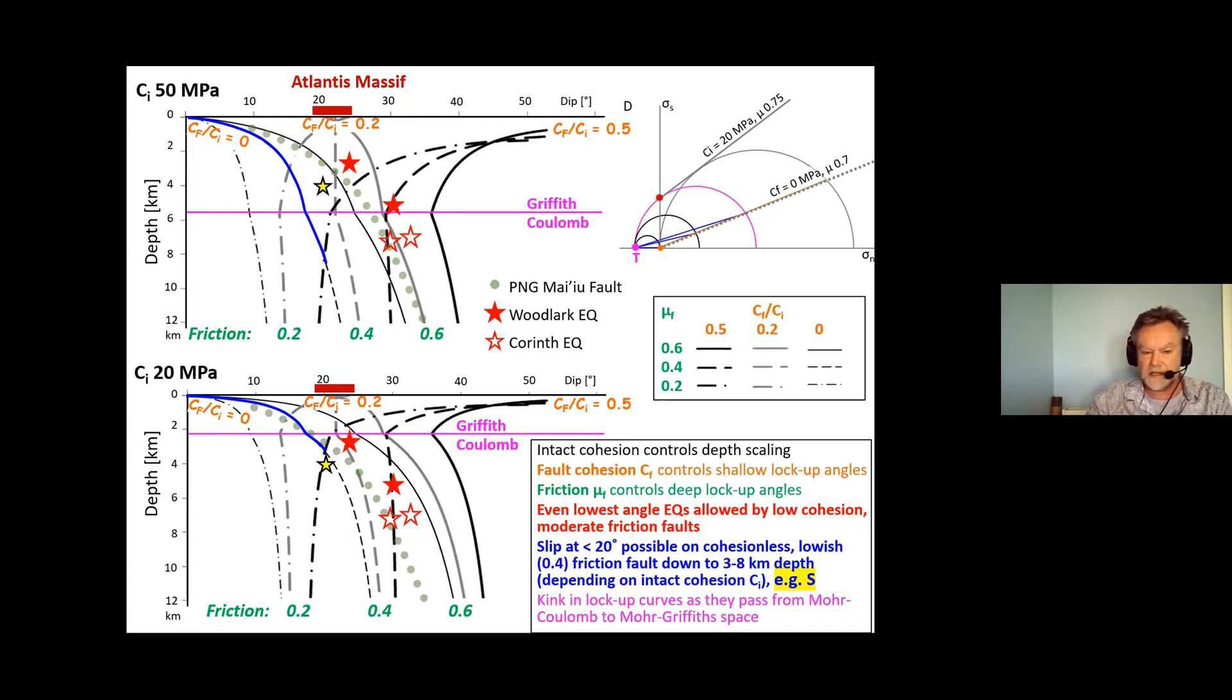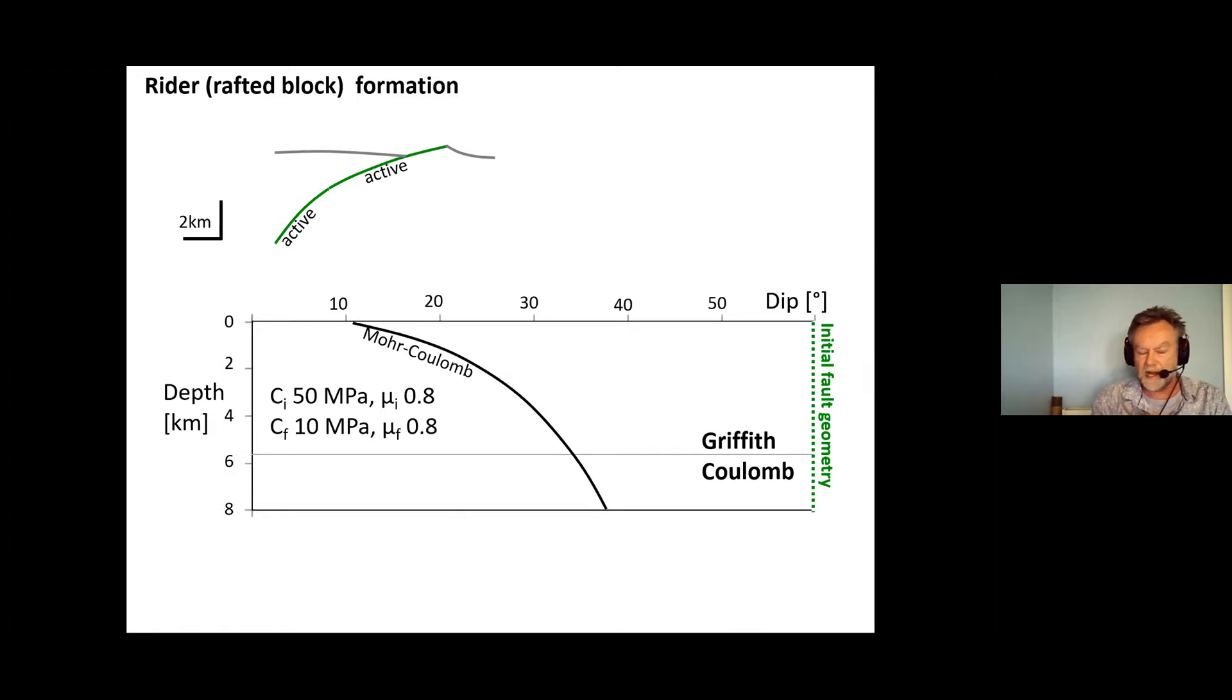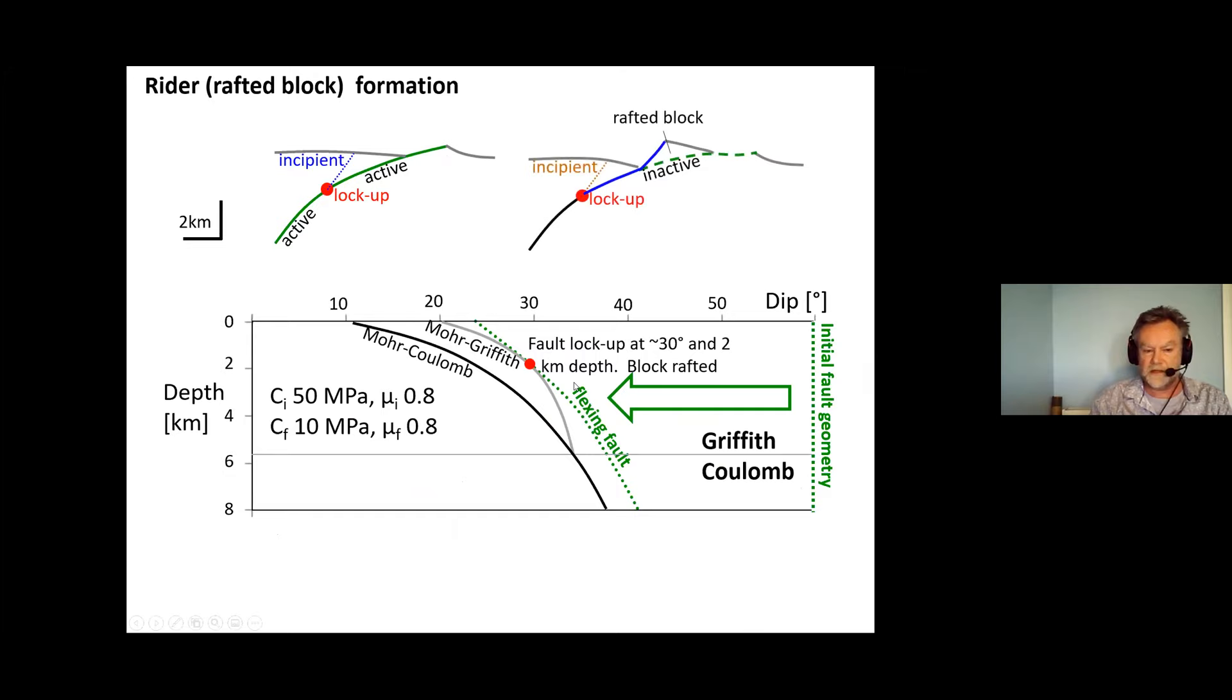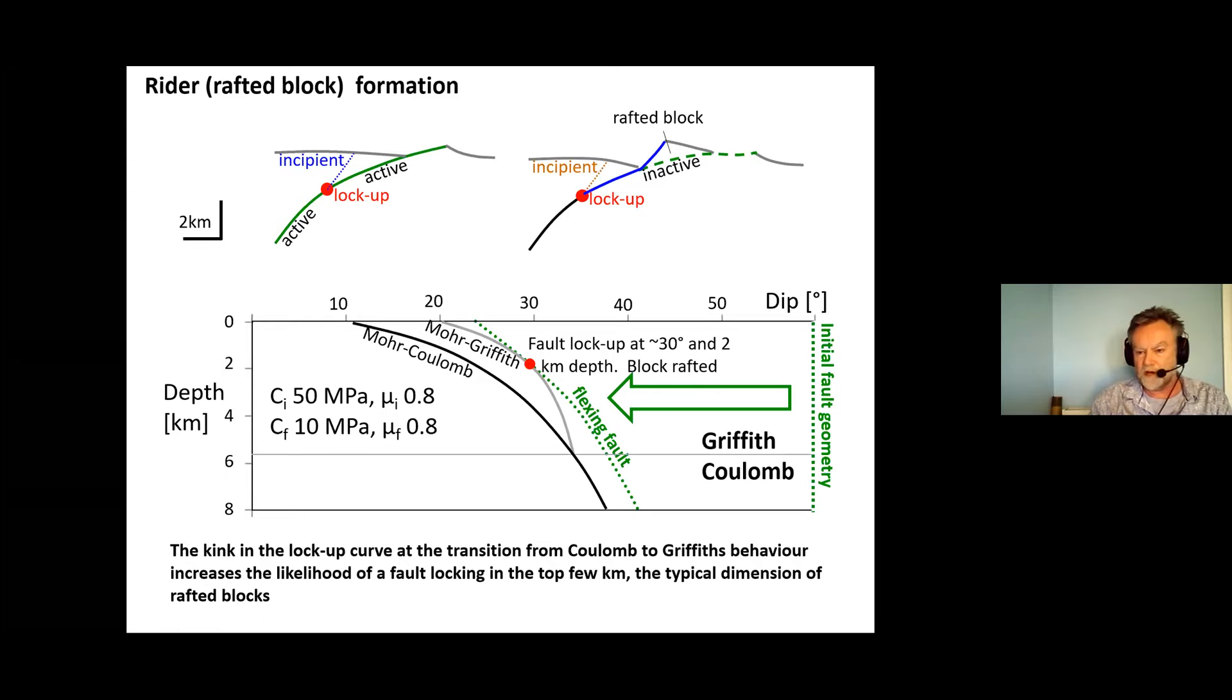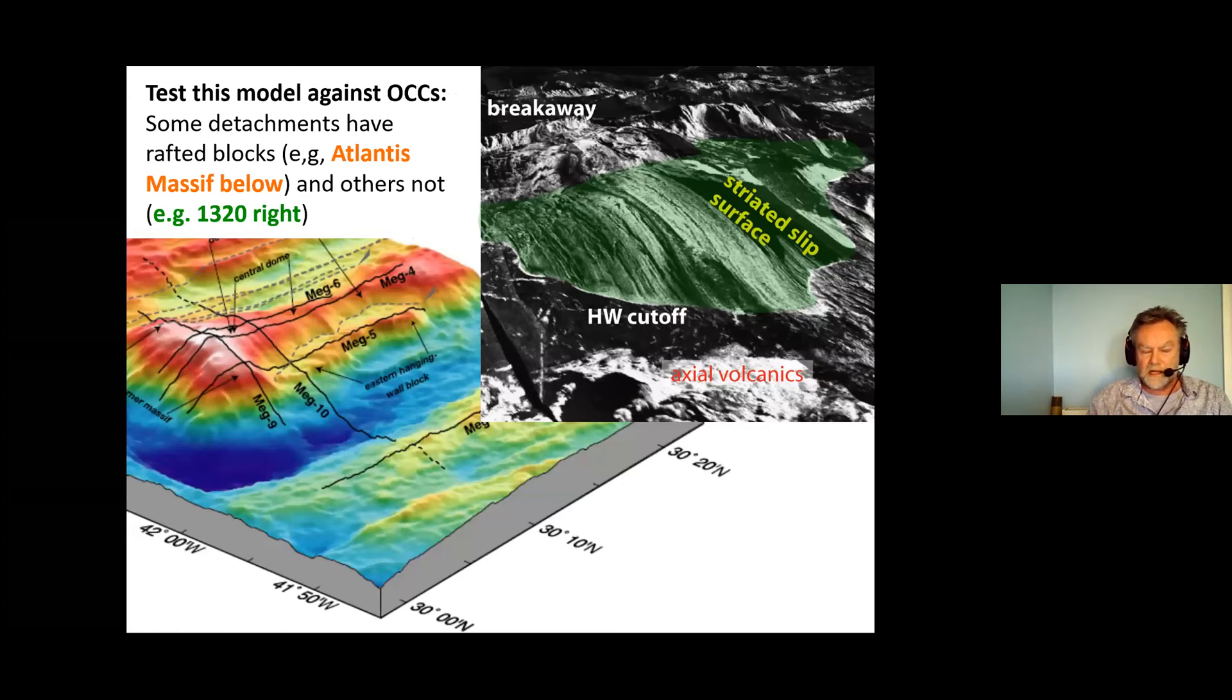We can now compare that with what's going on at the Atlantis Massif which I've highlighted there, the surface geometries in the dark red color. But let's go back and look at why this is important for allowing rider development. So this is what we had for Mohr-Coulomb behavior which we saw never really gets close to our flexing fault. It stays active at very low angles but if we switch to Mohr-Griffiths we suddenly get this change in behavior and we start to get the fault locking up at a depth in this case of about two kilometers which is the sort of dimensions we get typically for rafted blocks above low angle normal faults.